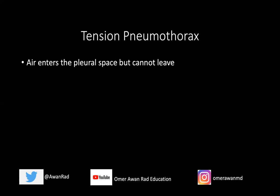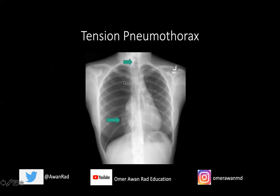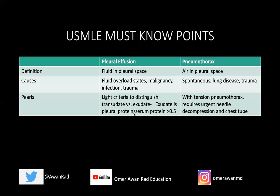A tension pneumothorax is a surgical emergency — it's when air enters the pleural space but cannot leave. One way to identify it on a chest x-ray is that the trachea will deviate away from the affected lung where the pneumothorax is. We must treat this emergently with needle decompression and chest tube placement. In this example, there is a large pneumothorax on the right side — the aerated lung is very small and completely collapsed, all that lucent area is air — and the trachea has been shifted to the left, when it should be midline. This is a tension pneumothorax requiring needle decompression and chest tube placement.